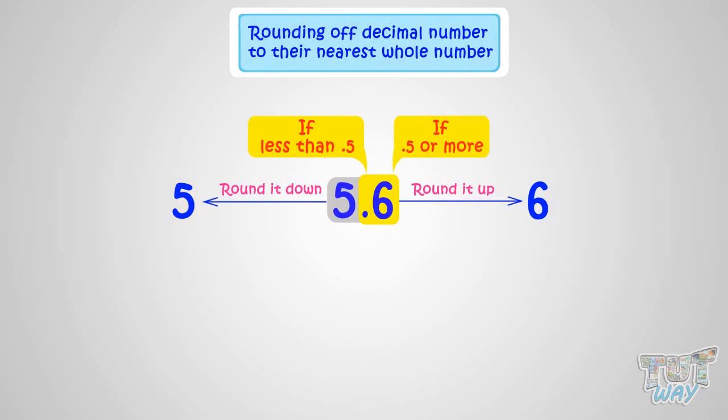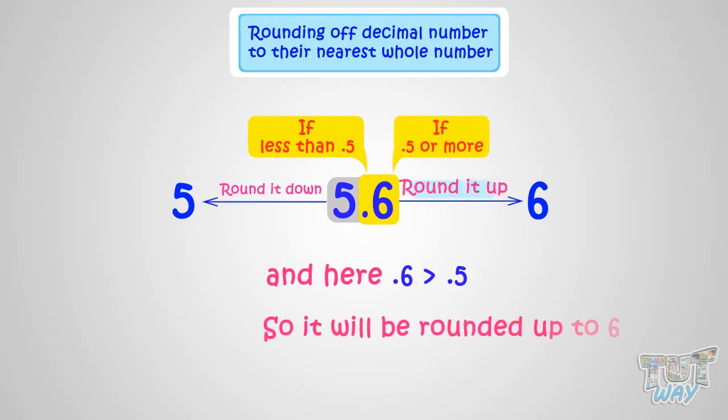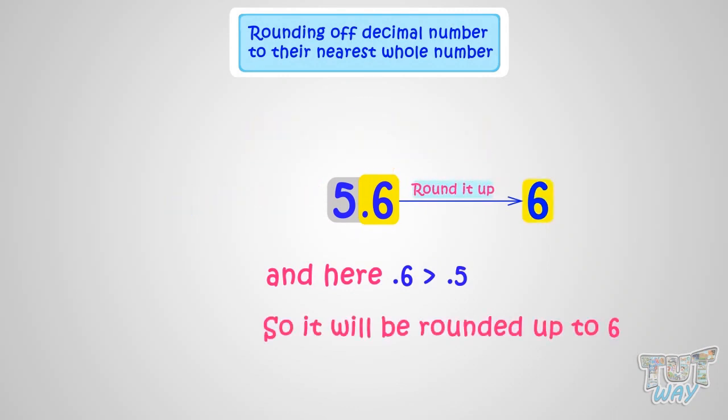And in this case, 0.6 is more than 0.5. So we will round it up to the next whole number, that is, 6.